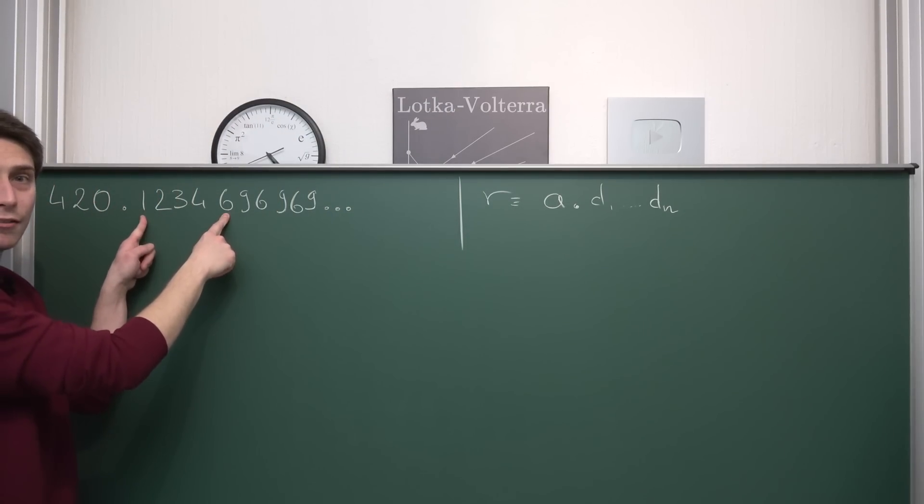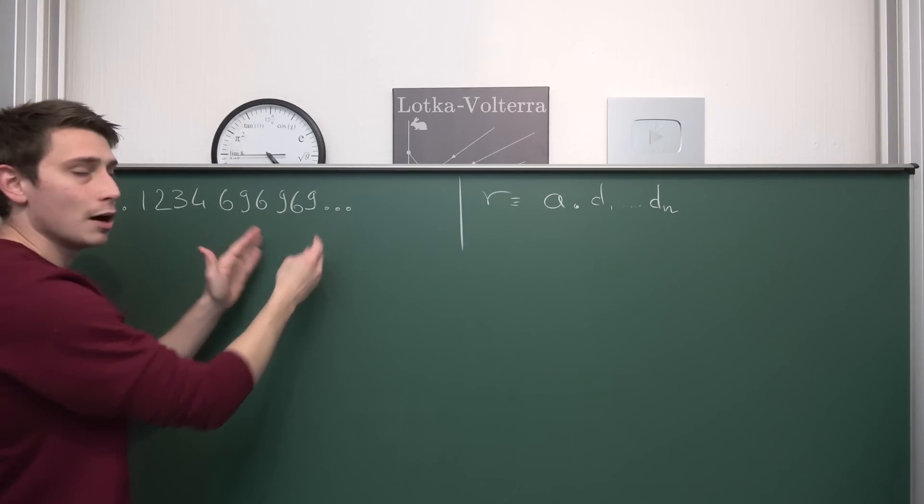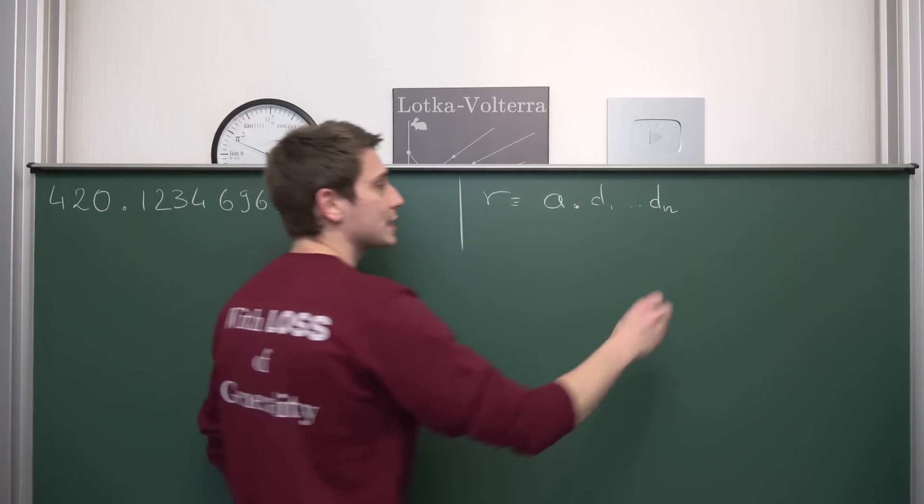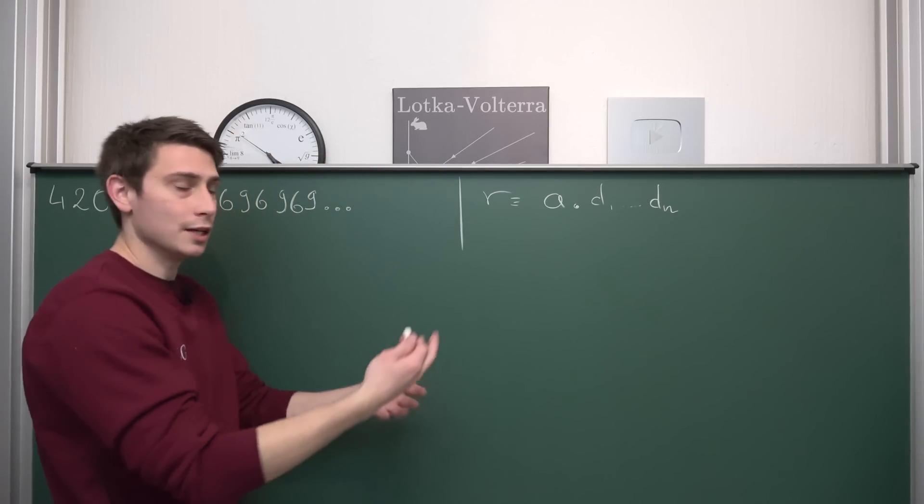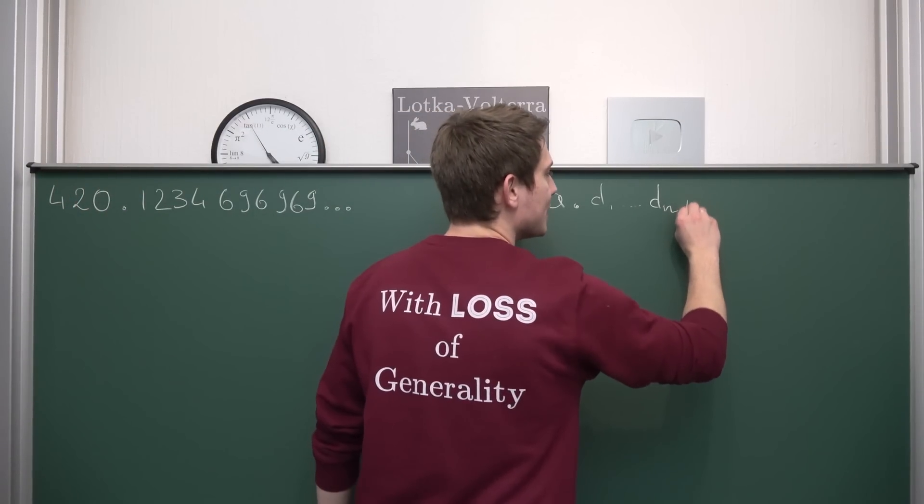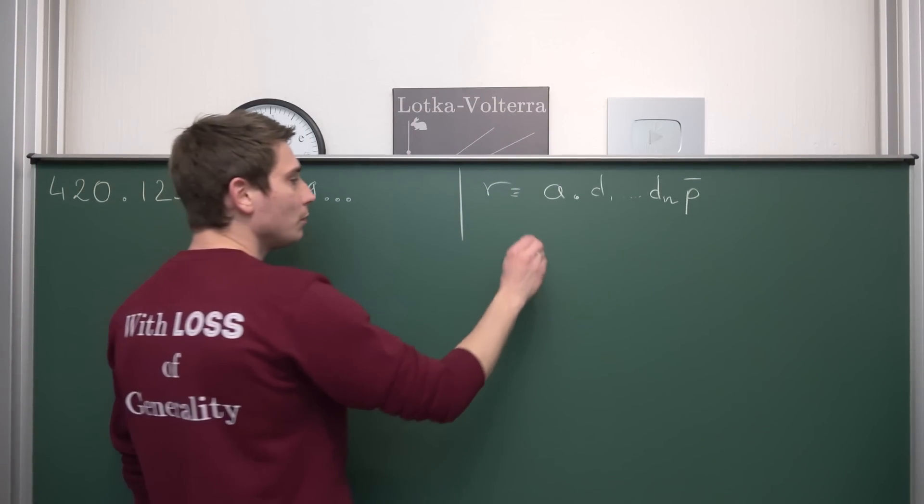Those are n digits that we have after the dot. And after those n digits, there is the periodic expansion, which is going to start. Last time around, we said that we can give this periodic extension a name. Let's say this thing is just P, which is going to repeat endlessly. Now, I want to write out P a little bit more.